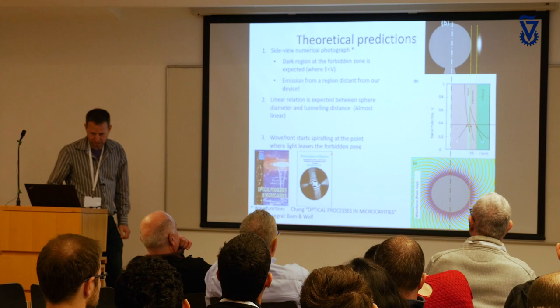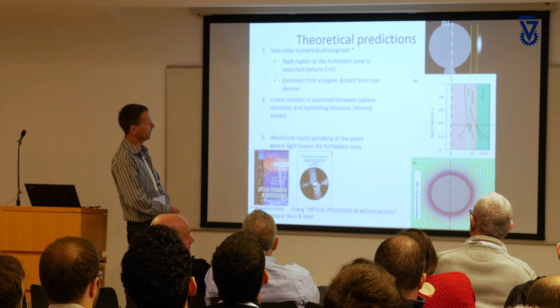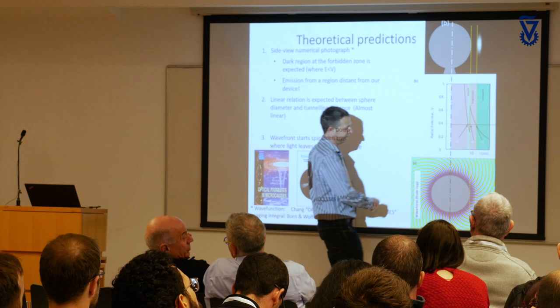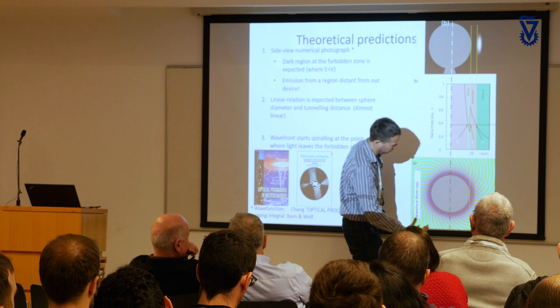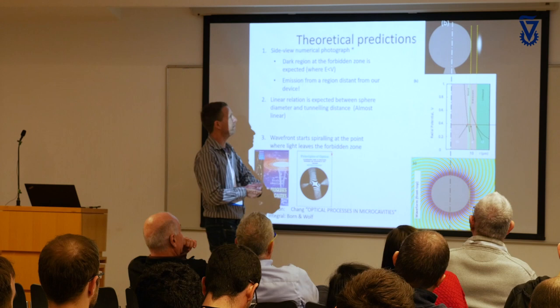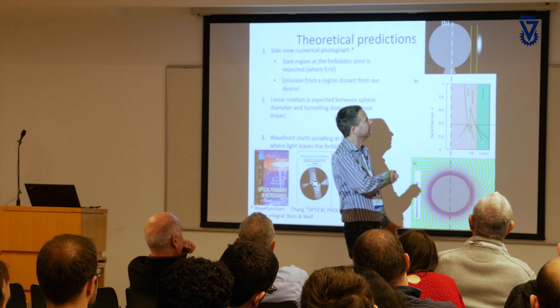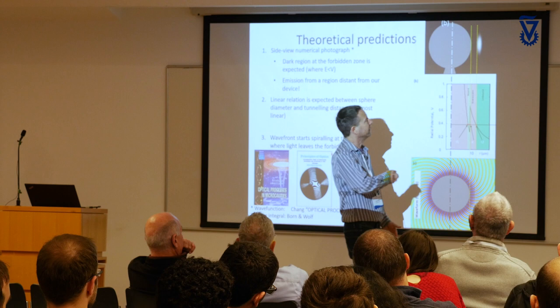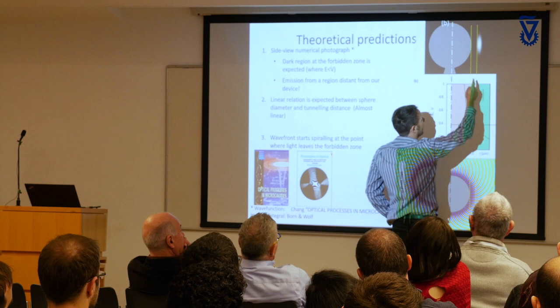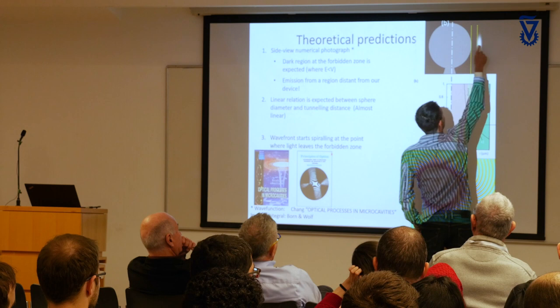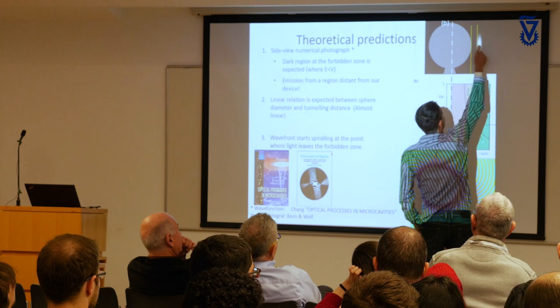We took the textbook solution for light circumferentially circulating in a sphere — from the microcavity textbook — and asked: what will happen if I put my eye or a lens at the side and image the light? We went to Born and Wolf, took the imaging integral, and asked what we would see. The theoretical prediction is that the microscope will take a picture of light tunneling through the forbidden zone, emitted from a point in space. There is nothing behind this point, nothing to the right or left. It looks like light is coming from there, while the region closer to the sphere remains dark.